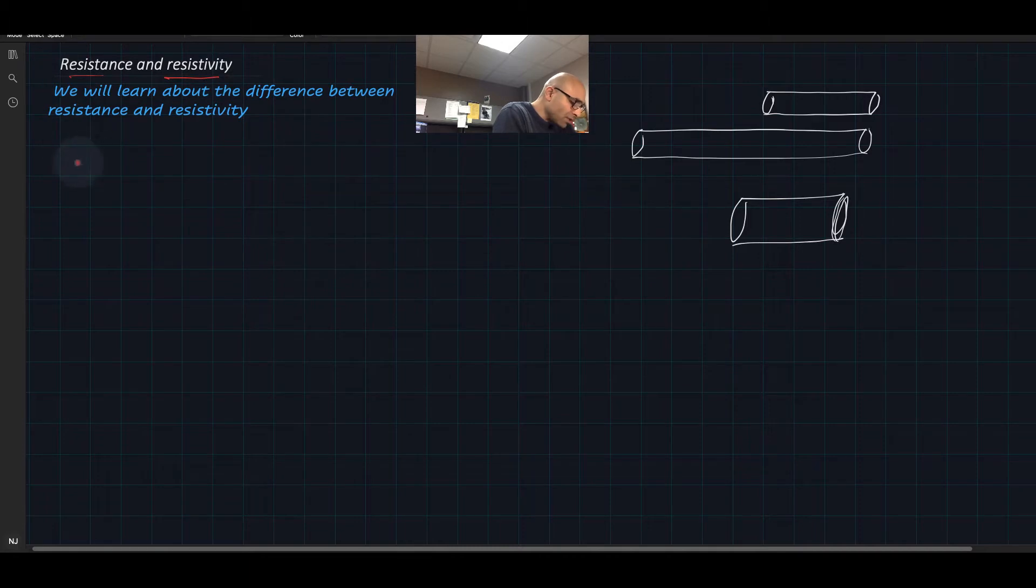We learned about resistance. We said resistance is basically R, and R is given by V over I, which is the voltage over the current. Now, what is resistivity?